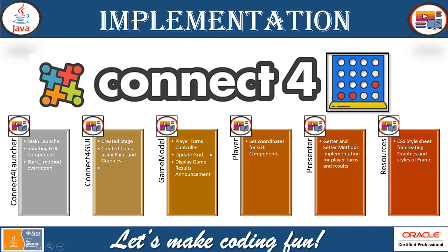For the model, view, and controller to work together, we need to make sure all data is collected from all the classes and communicated to other classes. We have a Player class that sets the coordinates for the GUI, a Presenter which has the getter and setter method implementations for player turns and results, and Resources which contains the CSS stylesheets for creating graphics and styles for the frame.